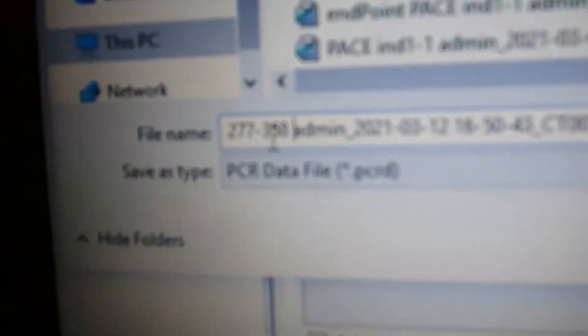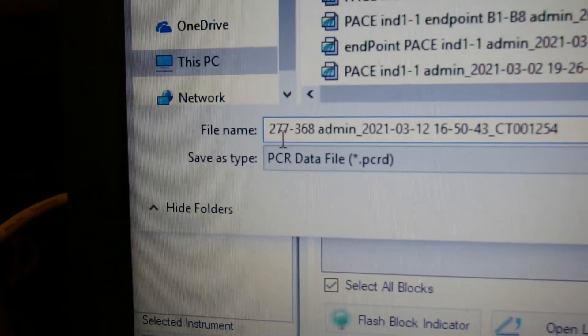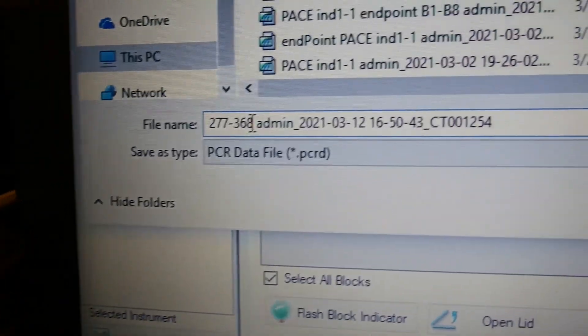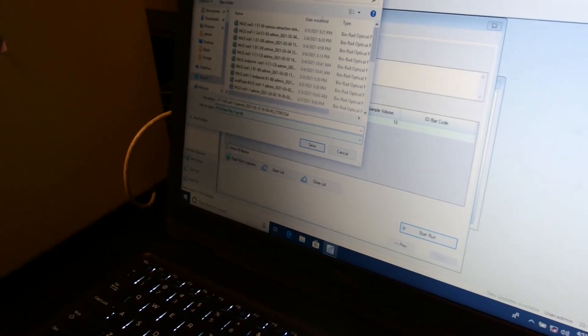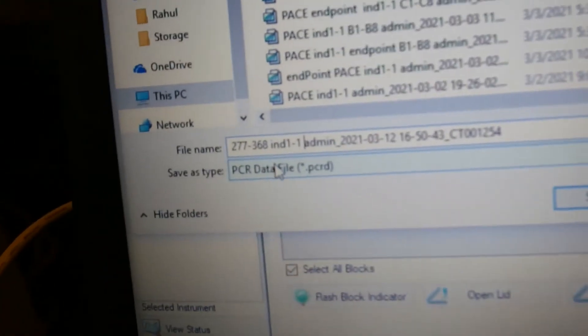Our file name should be our numbers of wells, so in this case it was 277 to 368, and I'm going to just say that we were looking at IND1 dash one. That'll be enough information that we can easily understand what this file is.